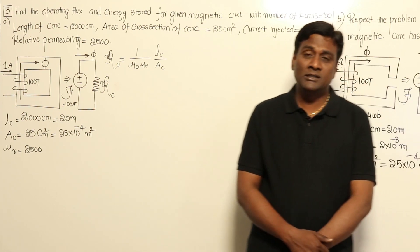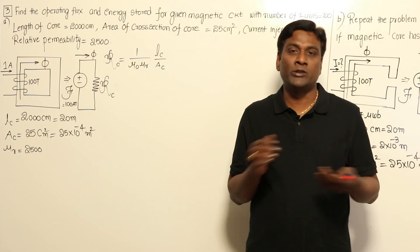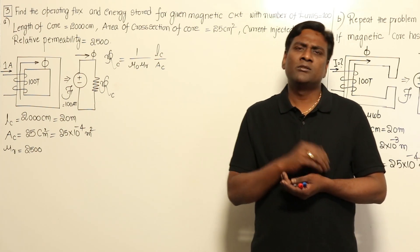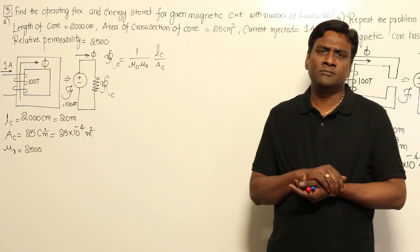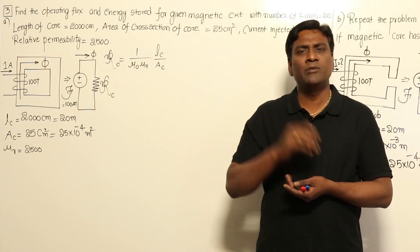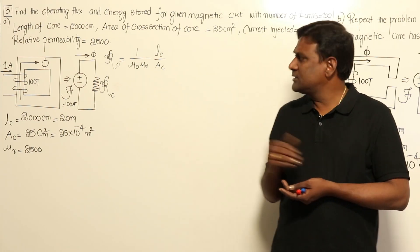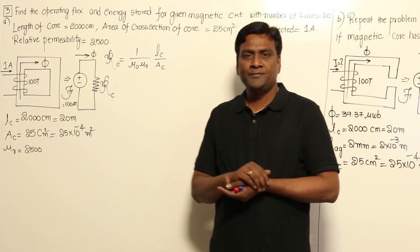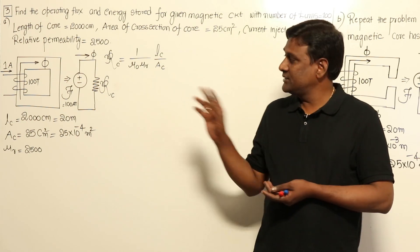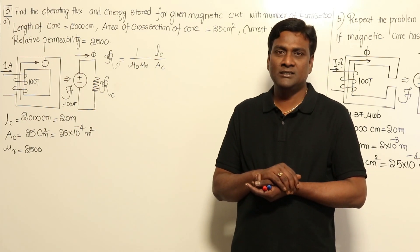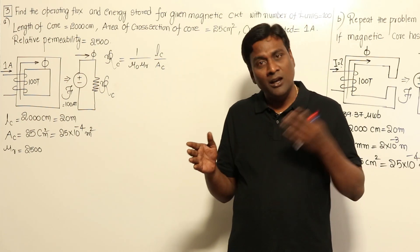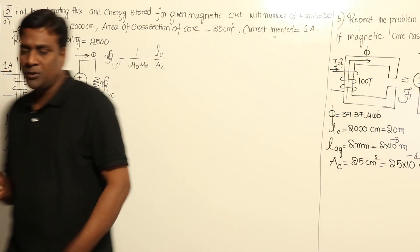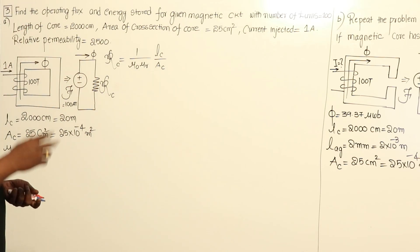In this problem, let us try to understand the difference between a transformer and other rotating machines. In rotating machines, one part should be rotating, so there is an air gap between the stator and rotor. I'm going to take the first problem without any air gap and the second problem with an air gap, so we can understand the differences between a transformer and other rotating machines.